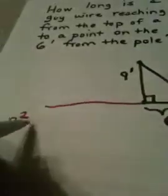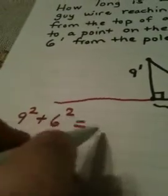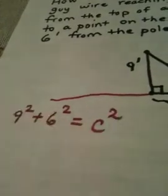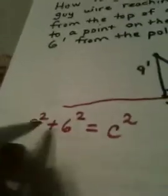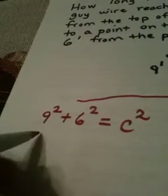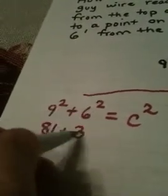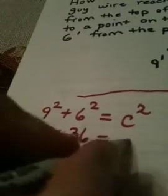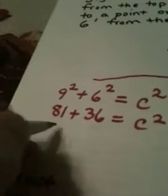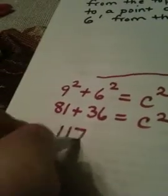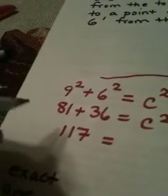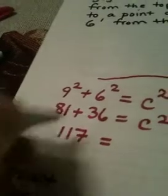When I apply the Pythagorean theorem, I'm going to have nine squared plus six squared equals C squared. Nine squared is 81, six squared is 36, so when I add these together I get 117 equals C squared.